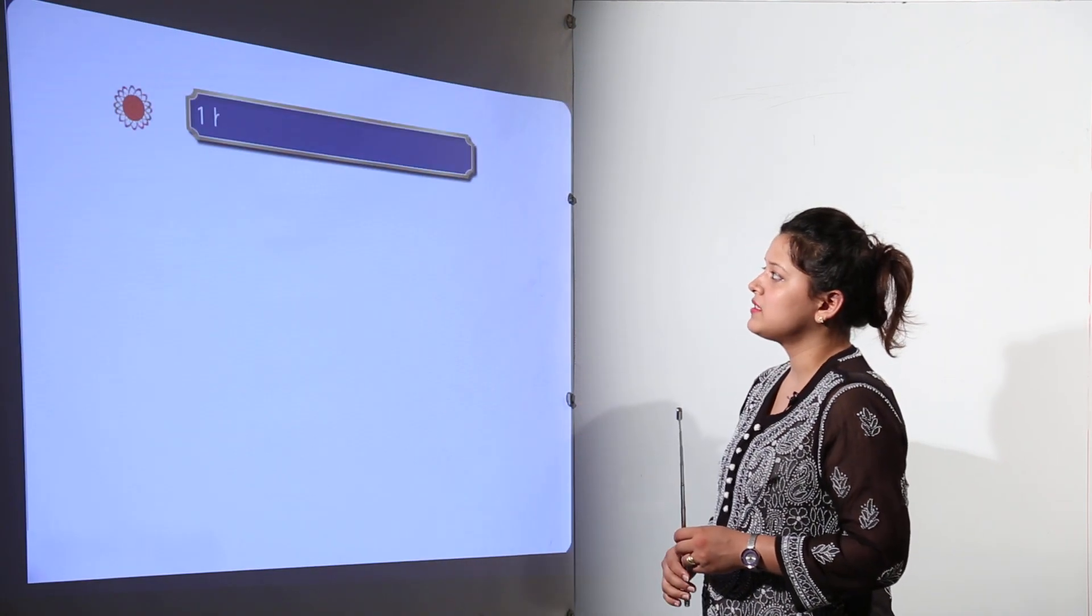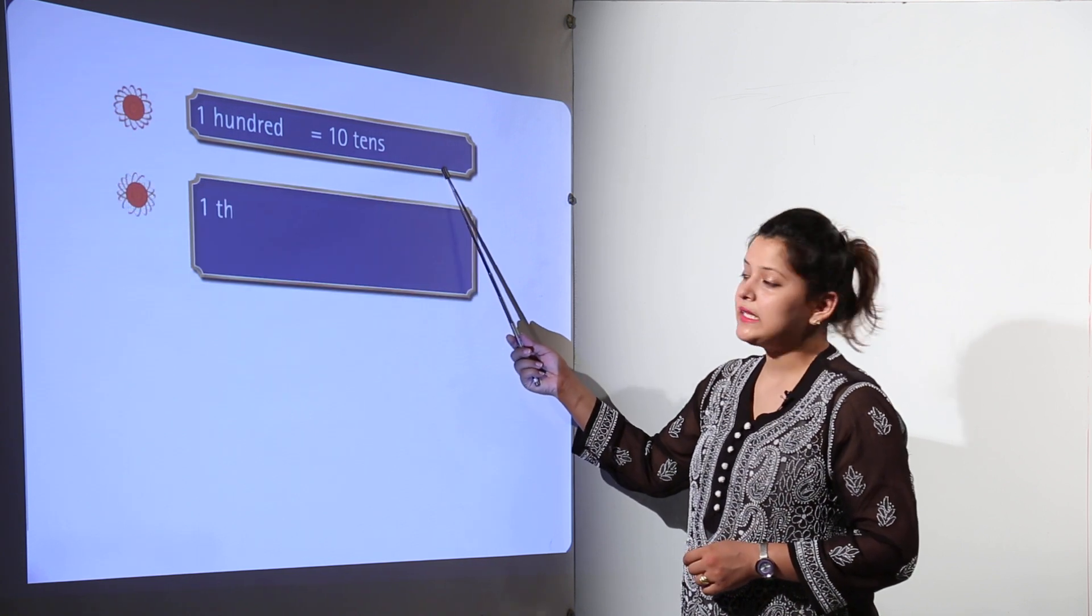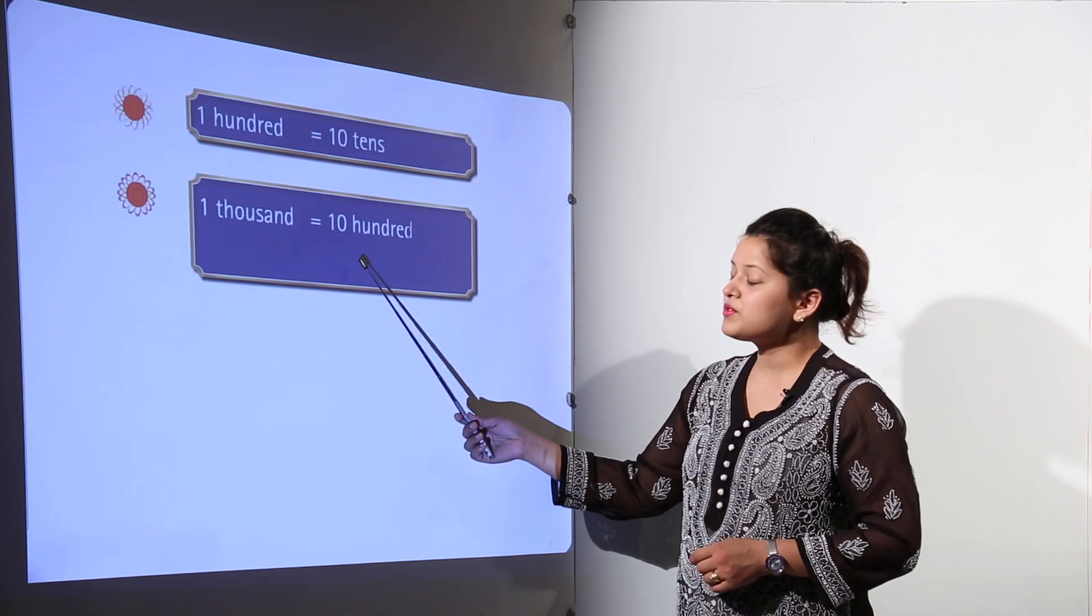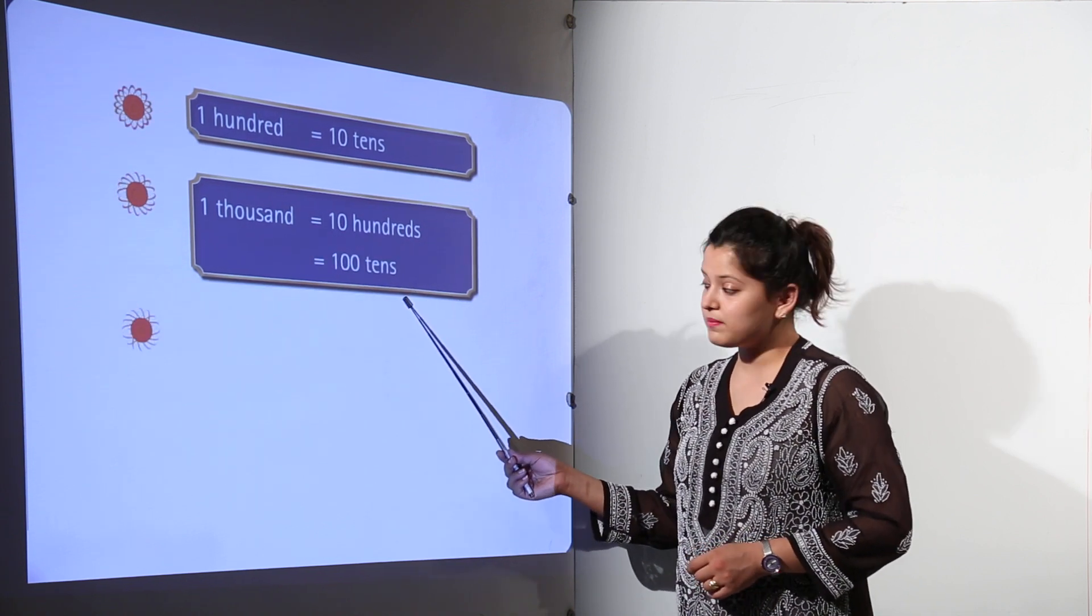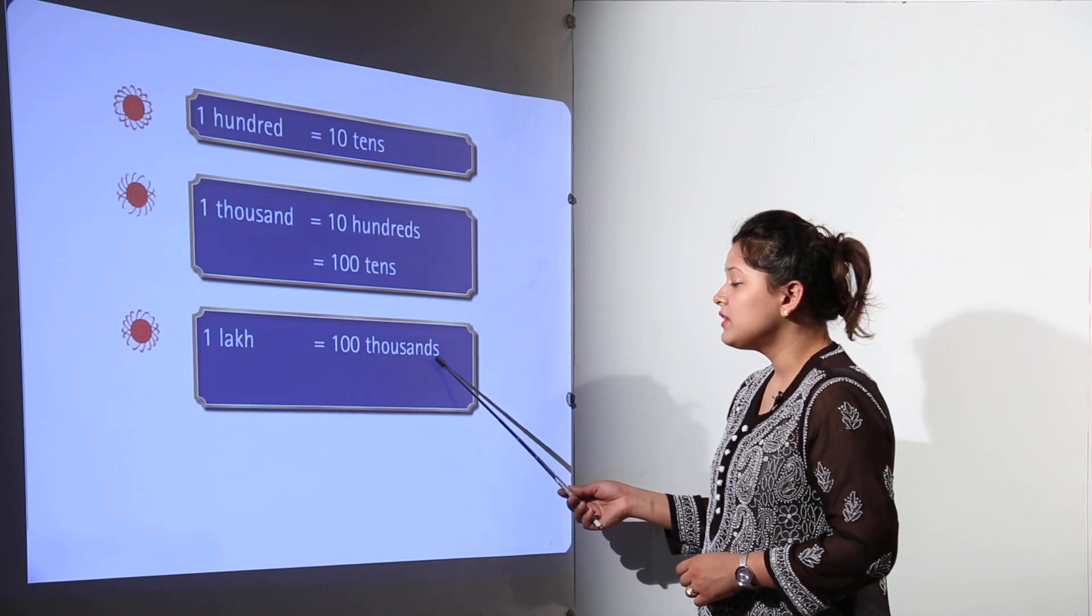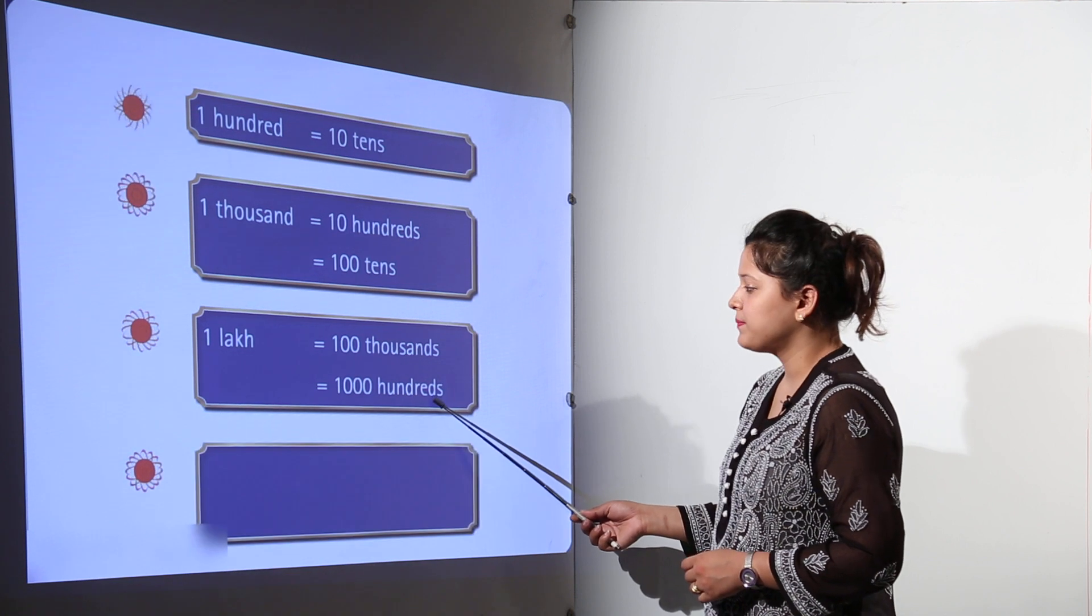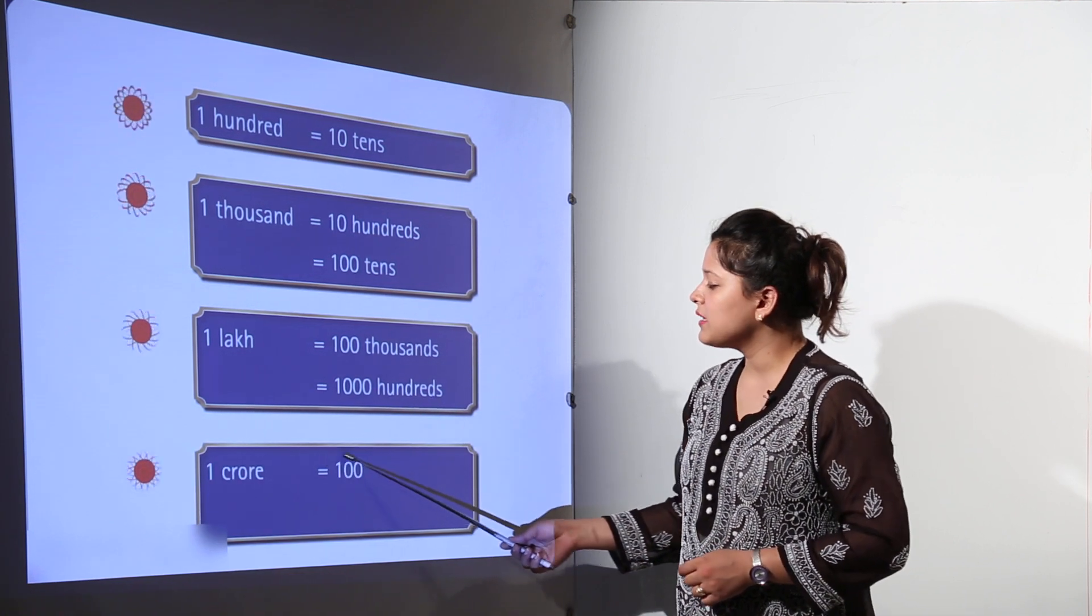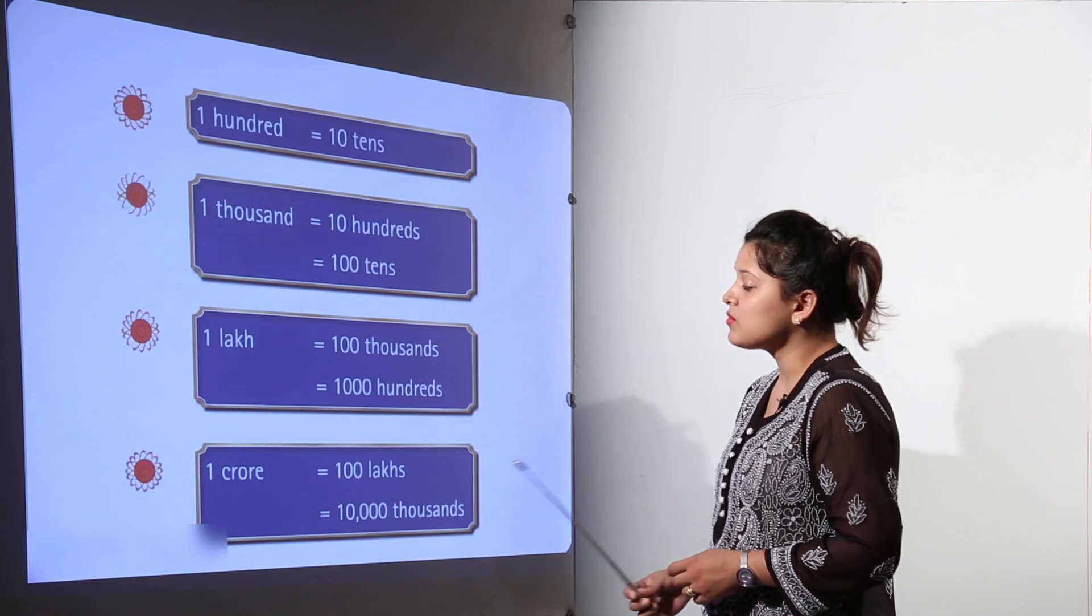Now large numbers in practice. We know that one hundred is equal to ten tens. One thousand can be written equal to ten hundreds or hundred tens. One lakh can be written as hundred thousands and also one thousand hundreds. One crores can be written as hundred lakhs and also ten thousand thousands.